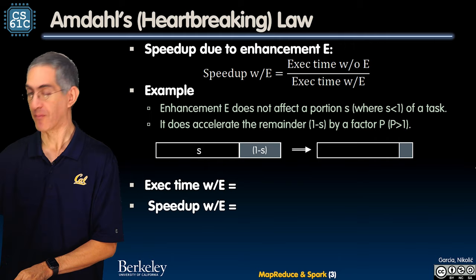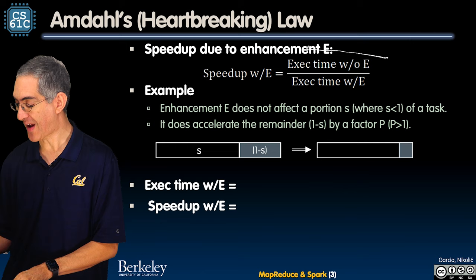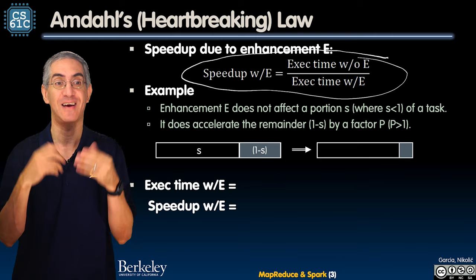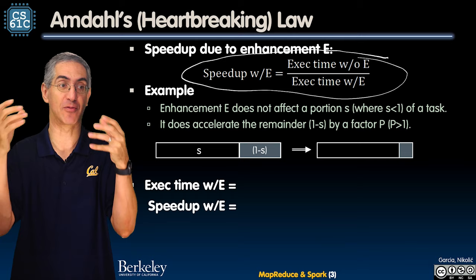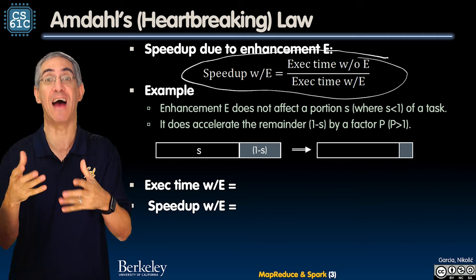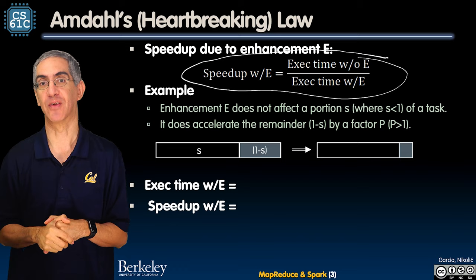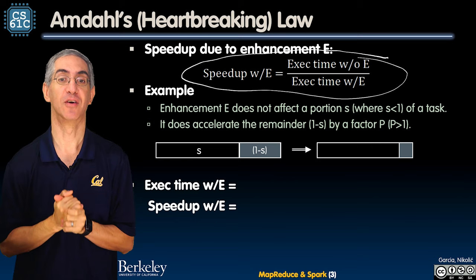There's a very simple equation to calculate that. The speedup with E is the execution time without E divided by the execution time with E. If the time is halved, then the speedup would be a factor of two. It's like a new kind of shovel that digs a hole in half the time — half the time on the bottom, and the two flips it, becomes a factor of two speedup.